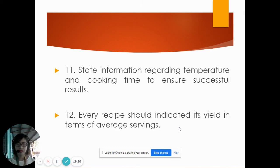Number twelve: every ingredient should indicate its yield in terms of average servings. Your recipe should state how many portions or servings your recipe makes, whether it's good for ten persons or five persons or six persons. Indicate that.